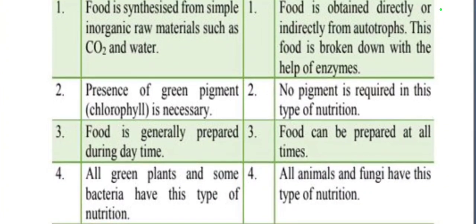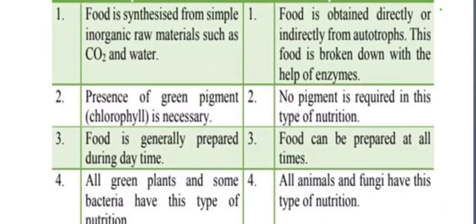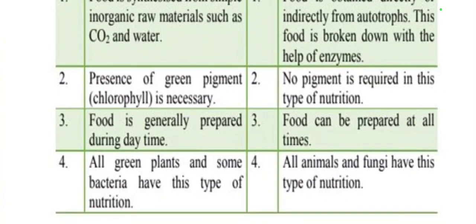In autotrophic nutrition, all green plants and some bacteria have this type of nutrition. Whereas in heterotrophic nutrition, all animals and fungi have this type of nutrition.